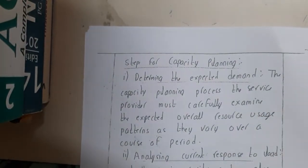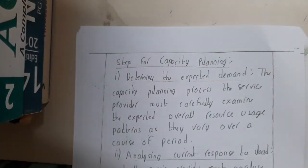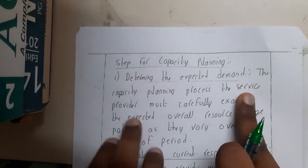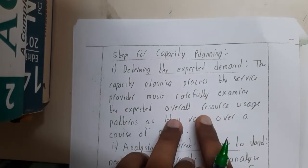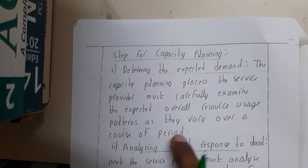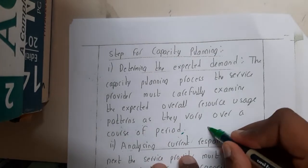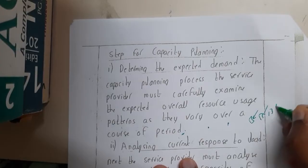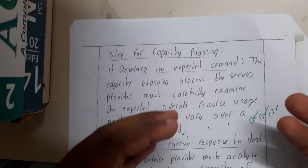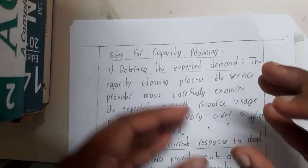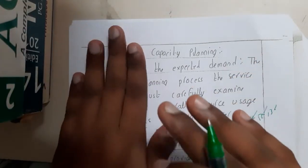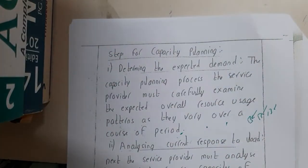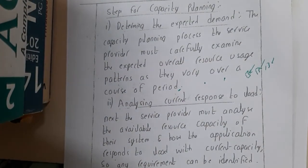This whole capacity planning process can be done in three different steps. The first step is determining the expected demand. During the capacity planning process, the service provider must carefully examine the expected overall resource usage pattern as it varies over a period of time. You cannot always predict when you will have high traffic or low traffic, so capacity planning is done based on user requirements — the consumer states their needs and the cloud provider confirms and provides accordingly.